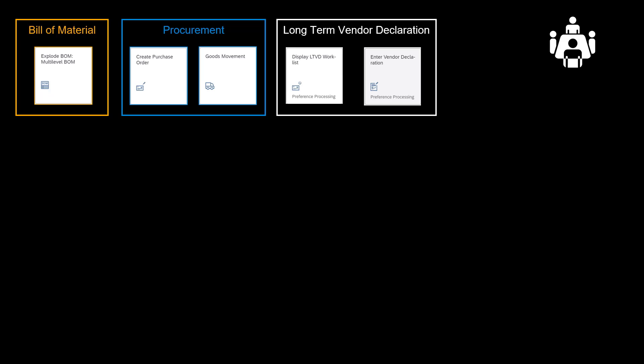Our scenario is rather complex, so please pay attention. Our journey will start by looking at a multi-level bill of material for a finished product. We will then procure the necessary raw materials needed for our production. Following our purchase order, we will request long-term vendor declarations from the supplier and show how we request and maintain them.